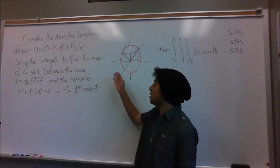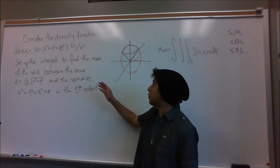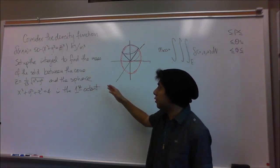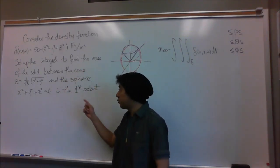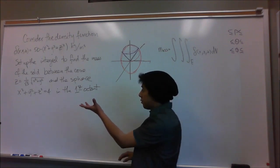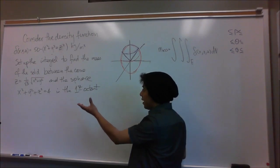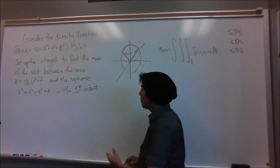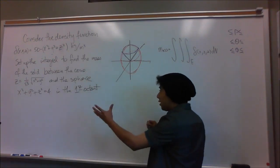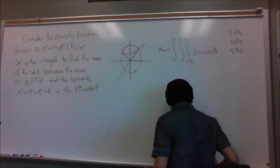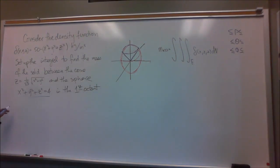Consider the density function 50 minus x squared plus y squared plus z squared kilograms over meters cubed. What we want is to set up an integral to find the mass of the solid between the cone z equals 1 over the square root of 3 times the square root of x squared plus y squared, and the sphere x squared plus y squared plus z squared equals 4, all in the first octant.